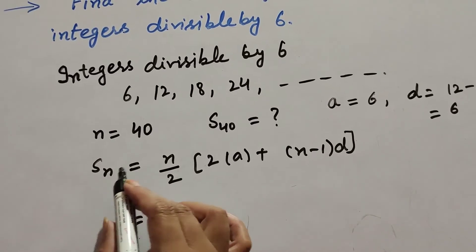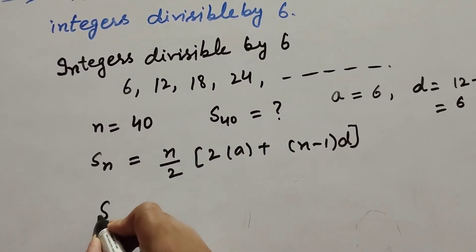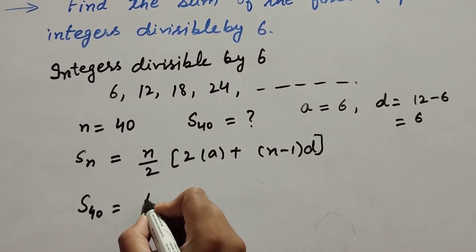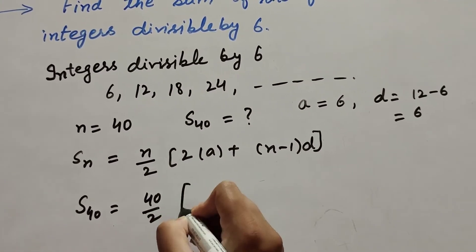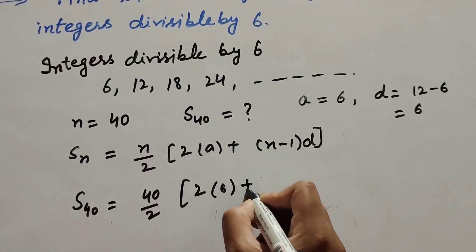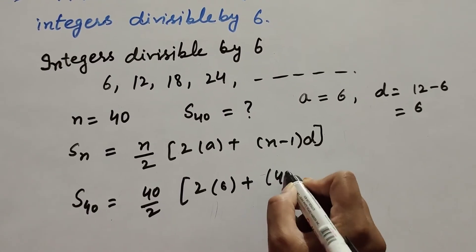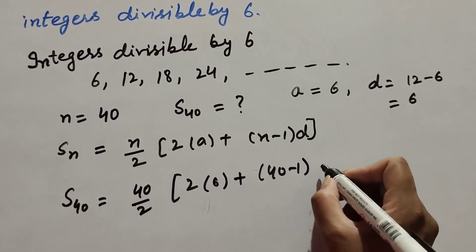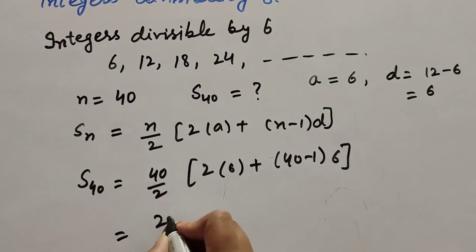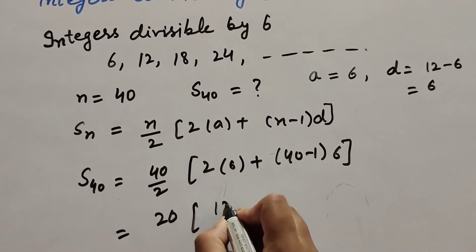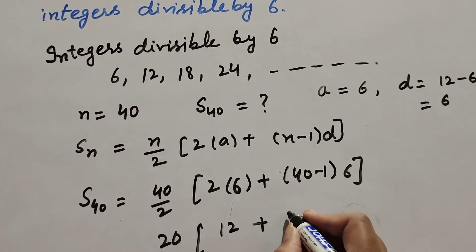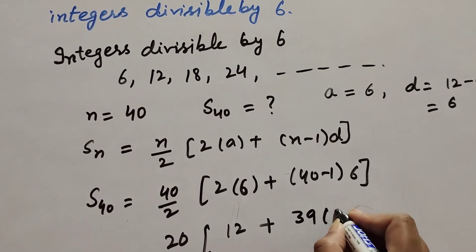We find the sum of 40 terms of the AP. So n is equal to 40 over 2, into 2a where a is the first term 6, plus n minus 1 into d where d equals 6. So 40 divided by 2 equals 20, and 2 multiplied by 6 equals 12, plus 40 minus 1 equals 39, into 6.